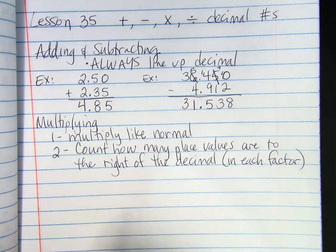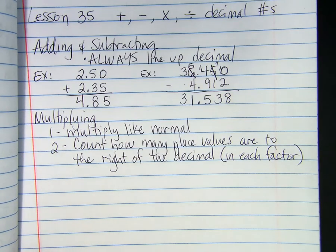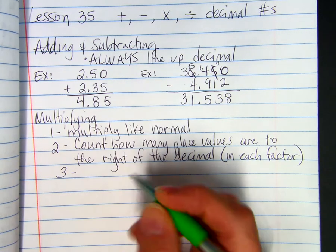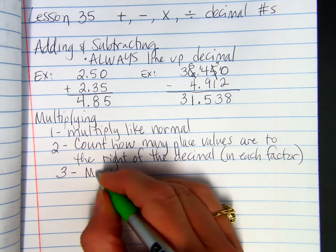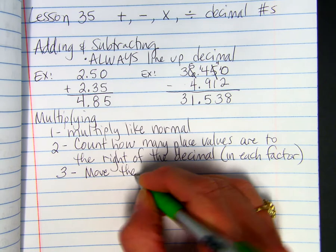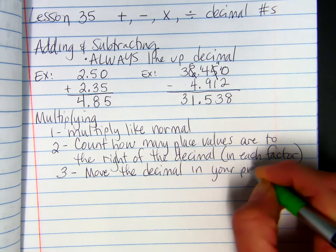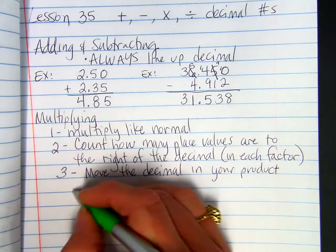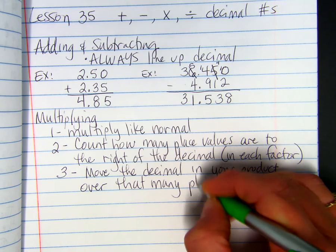And, you'll count them together. So, if one factor has two decimal places and the other one has one decimal place, then you would count it as three. And, on your answer, you're going to make sure that there's three decimal places. So, you're going to move the decimal in your product over that many places. So, whatever you got for number two.